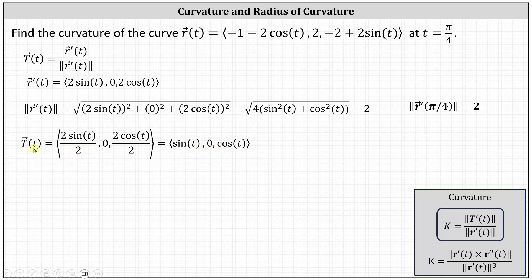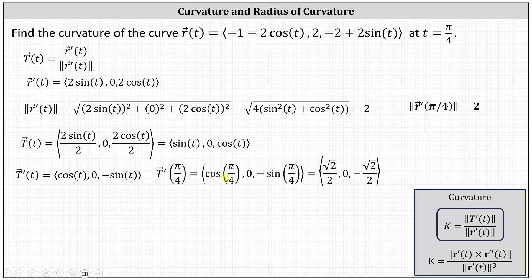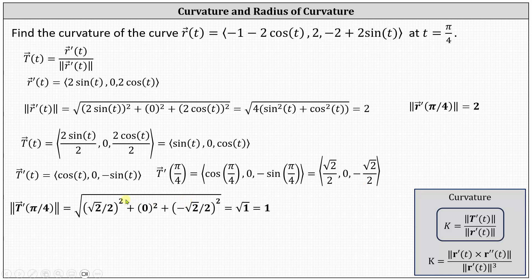Now we determine T prime of t by differentiating each component of T of t. T prime of t is the vector function with x component cosine t, y component zero, and z component negative sine t. Substituting pi divided by four — recalling that cosine and sine of pi over four both equal square root two divided by two — T prime of pi over four is the vector (√2/2, 0, −√2/2). The magnitude equals the square root of two-fourths plus zero plus two-fourths, which gives the square root of one, equal to one.